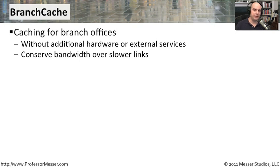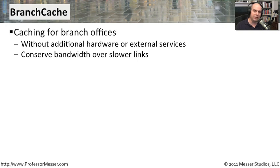Branch Cache is a capability added to Windows 7 and Windows Server 2008 R2 so that you could cache information locally that normally would have to come across very slow wide area network connections. When you're over those slower WAN links, transferring a single file can take a long time. If somebody else at your branch office needs access to the same file, you don't want them to have to go back to the WAN and transfer that same file again. Instead, you'd have a cached copy accessible on your local network without spending the bandwidth transferring it across the link.